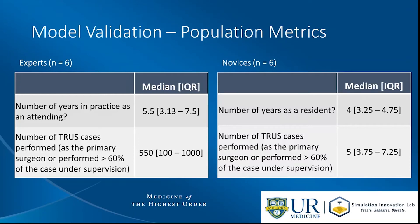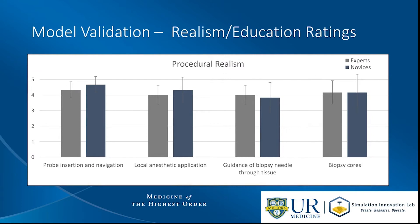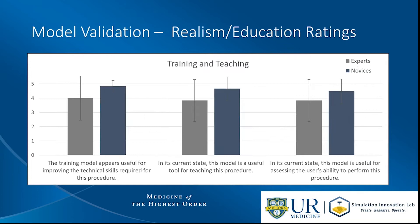Proceeding with the finalized model, six novice urologic residents were recruited to participate in the study alongside the six expert urologists. When asked how well the model replicates the relevant human anatomy, with one representing strongly disagree and five representing strongly agree, experts and novices rated the model as 3.75 and 4.5 out of 5 respectively. Both experts and novices rated the model above a 4 when asked if the simulated tissue accurately resembles live human tissue, and rated the ability of the simulation to mimic key portions of the procedure highly at or above 4 out of 5 for most procedural steps. Experts and novices both agree that the model is useful for improving technical skills, teaching the procedure, and assessing the user's ability to perform the procedure.